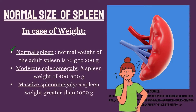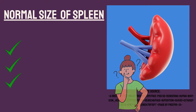In terms of weight: the normal weight of the adult spleen is 70 to 200 grams. For moderate splenomegaly, the spleen weighs from 400 to 500 grams. For massive splenomegaly, the spleen weighs greater than 1,000 grams.